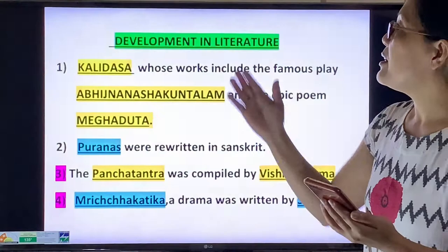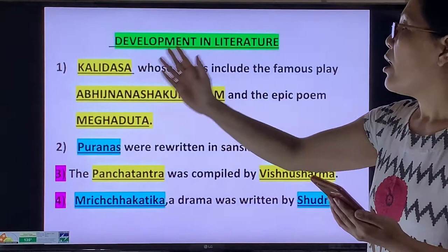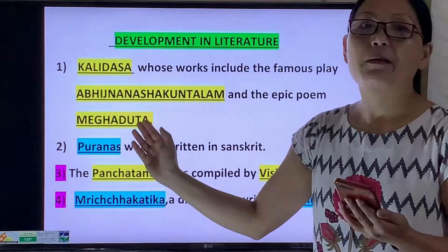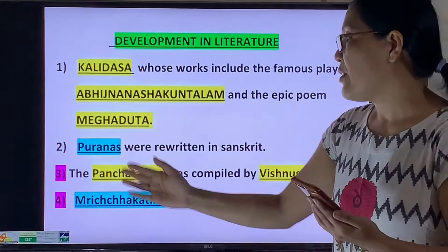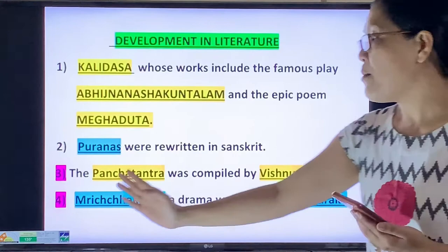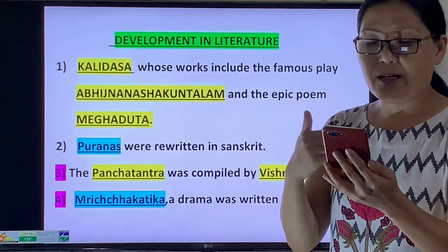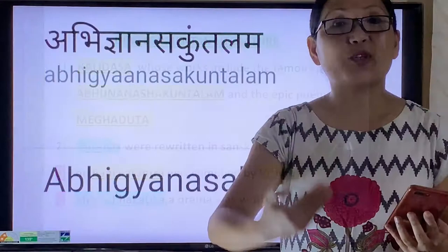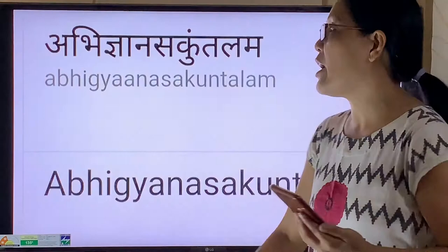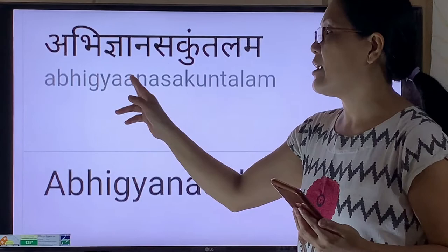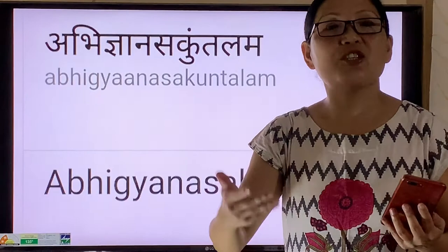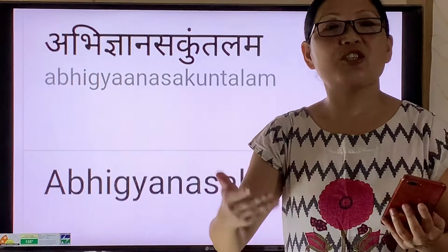The next topic is development in literature. Number one: Kalidasa, whose works include the famous play Abhijnanasakuntalam — which you may simplify as Shakuntala — and the epic poem Meghaduta. Number two: the Puranas were rewritten in Sanskrit. Number three: the Panchatantra was compiled by Vishnu Sharma. Number four: the drama Mrichakatika was written by Shudraka. The word 'Abhijnanasakuntalam' uses the spelling J-N-A-N-A, pronounced as 'gnana'.